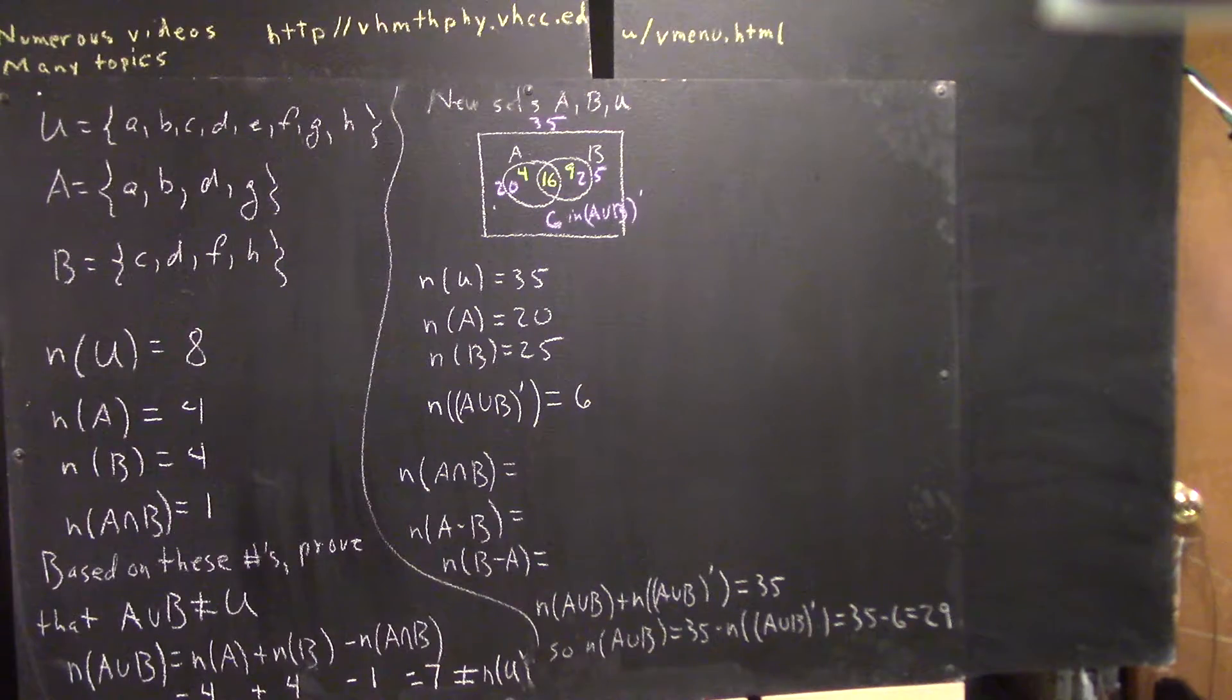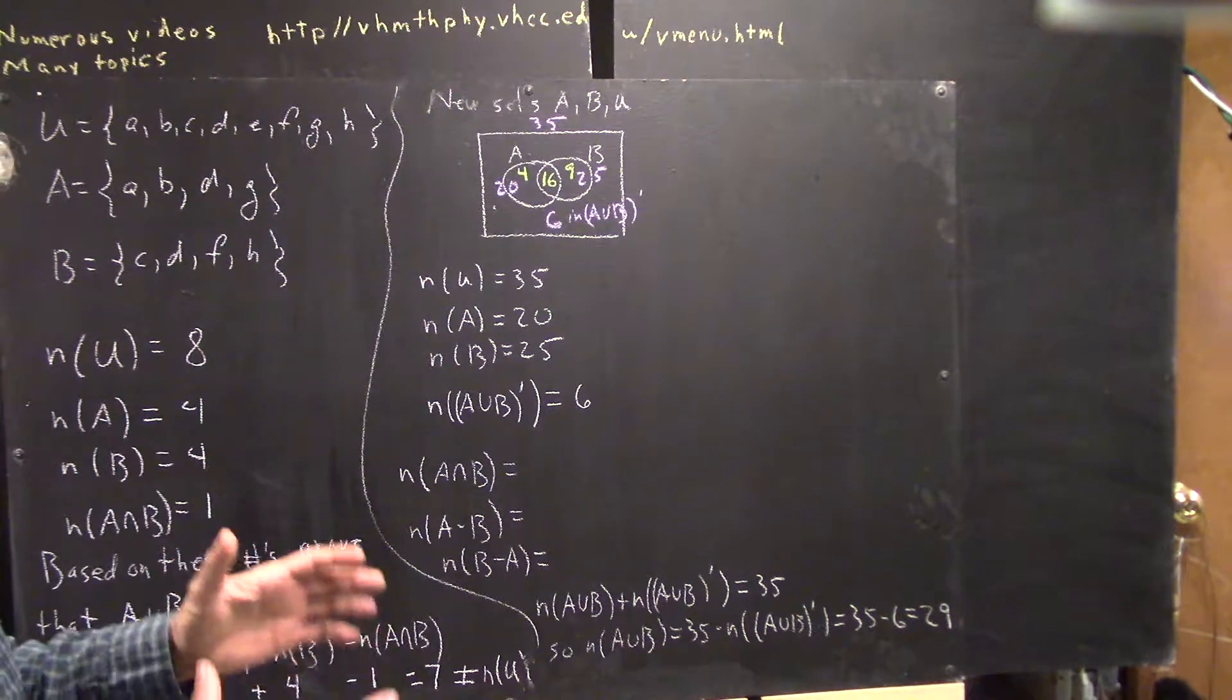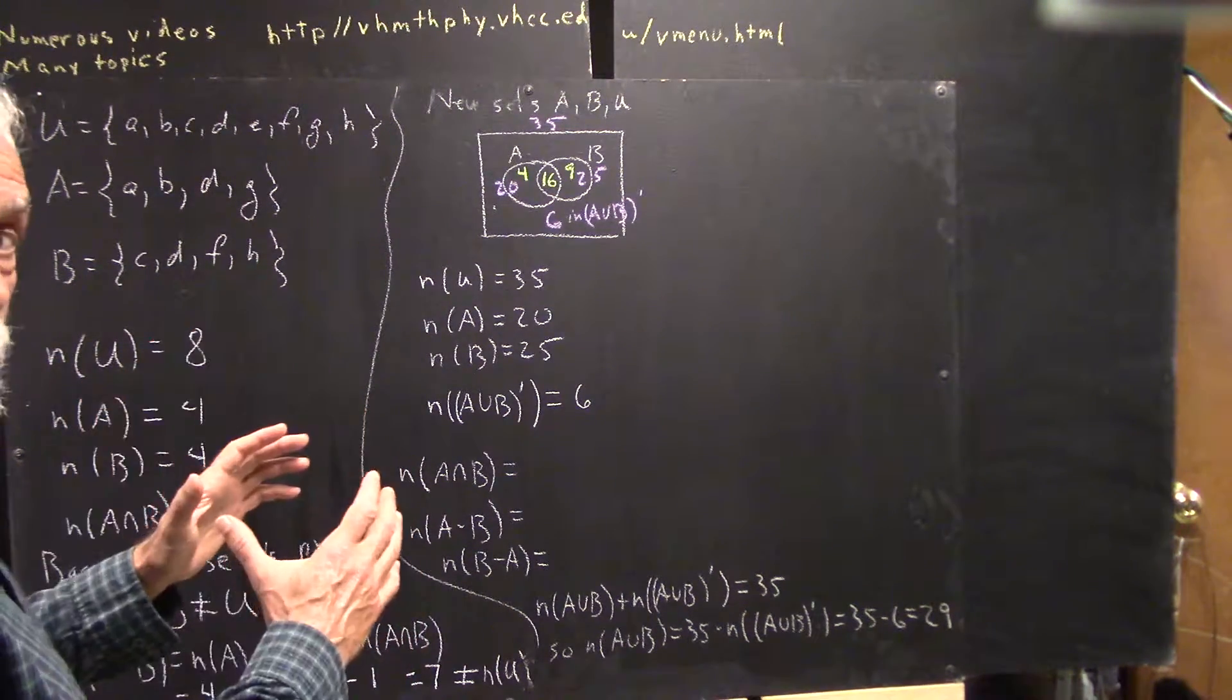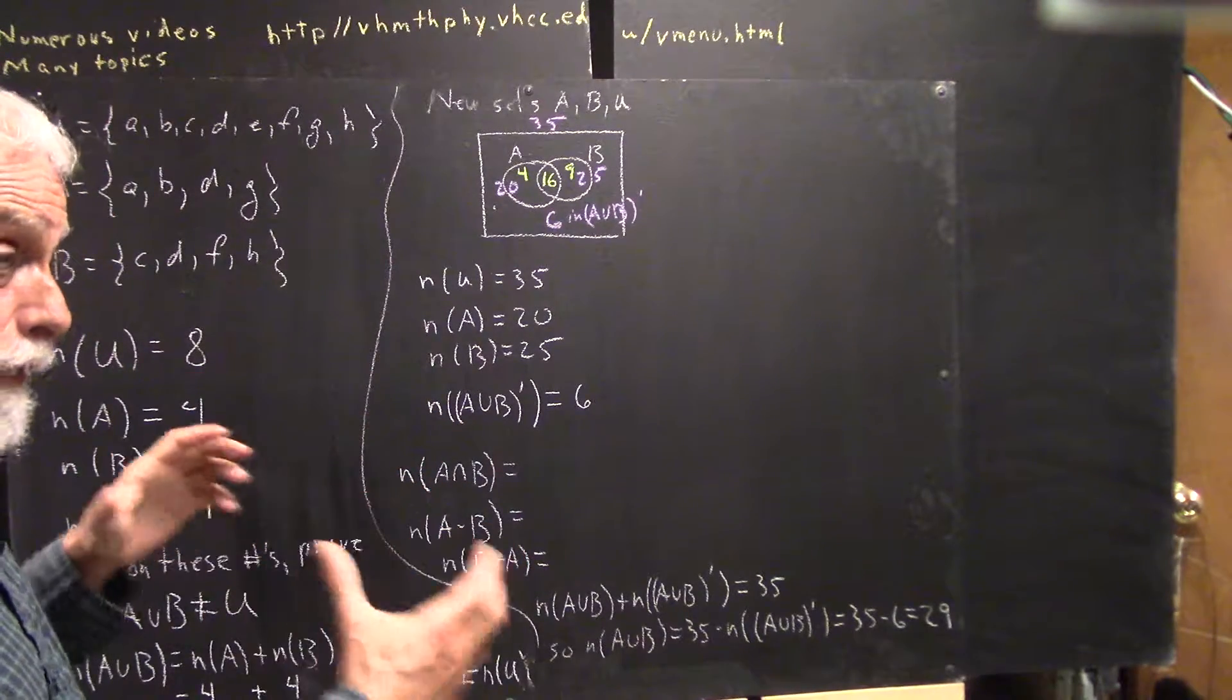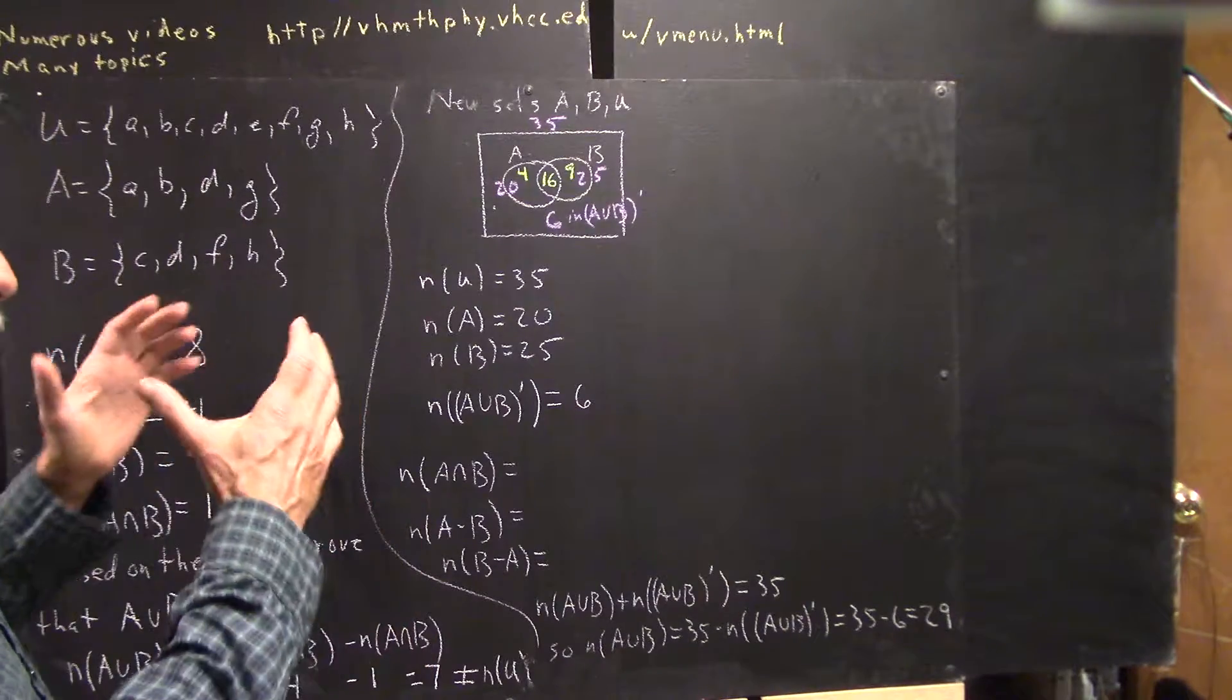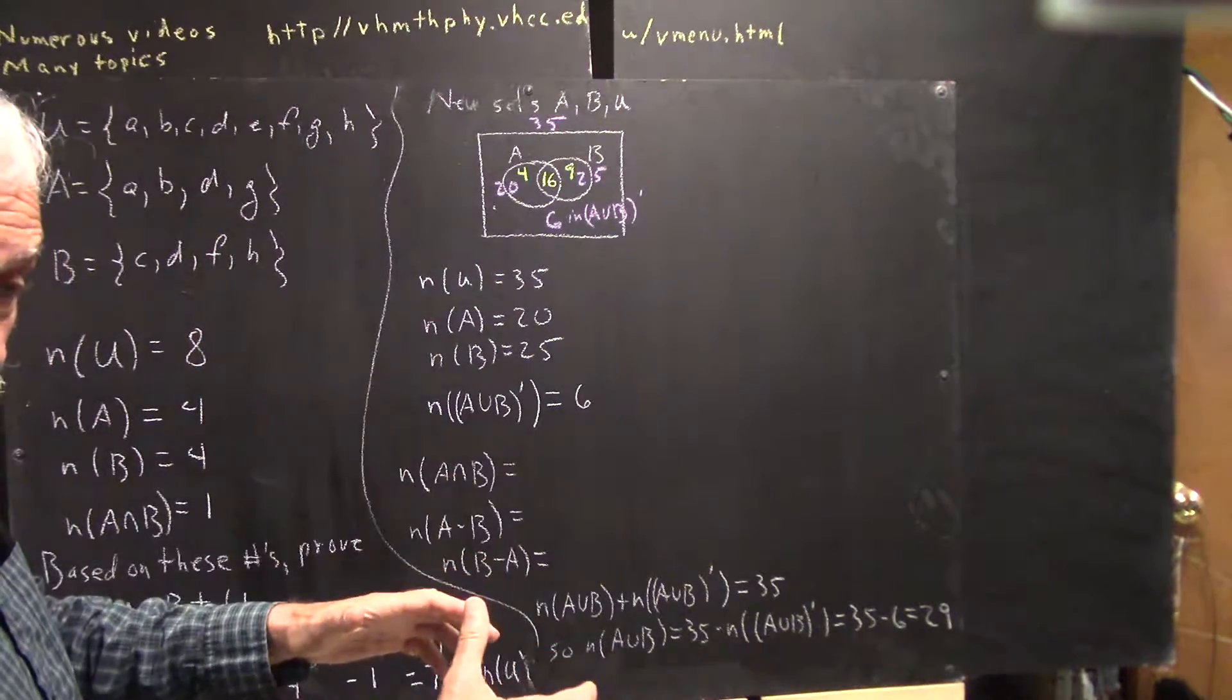Okay, well, what do we know? We know that if you have the union of a set A and a set B, the number of elements in that union could be equal to the number in A added to the number in B.